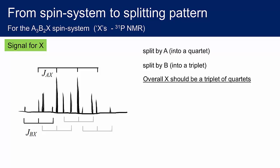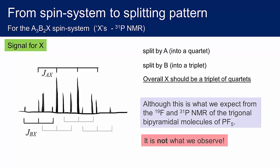At this point we hit a bit of a snag. If we actually go and record the 19F NMR spectra and the 31P NMR spectra of phosphorus pentafluoride, these predictions are not what we observe. OK. Don't panic. There's nothing wrong with our approach. In fact, we just need a little bit more chemical insight in order to make sense of the actual observations.